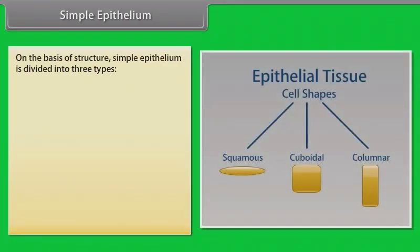On the basis of structure, simple epithelium is further divided into three types. They are squamous, cuboidal, and columnar.